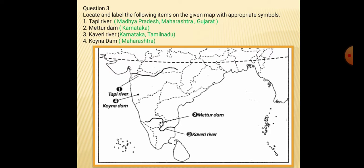Next question: Locate and label the following items on the given map with appropriate symbols. Taphi River flows through Madhya Pradesh, Maharashtra and Gujarat. Second, Mettur Dam is situated in Karnataka. Kaveri River flows through Karnataka and Tamil Nadu and drains into the Bay of Bengal. Koina Dam is in Maharashtra.